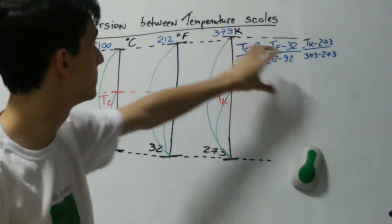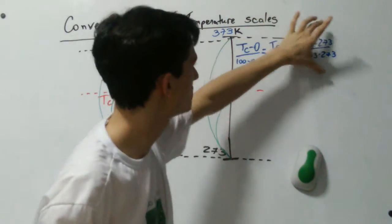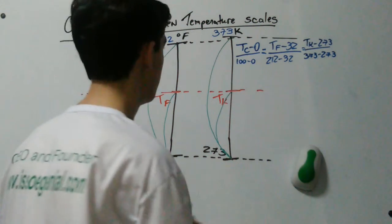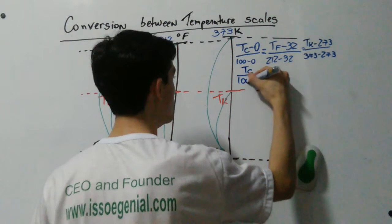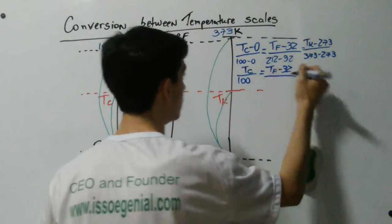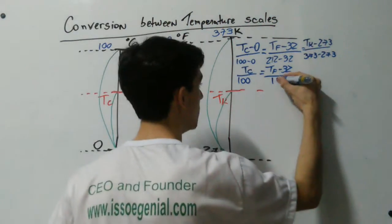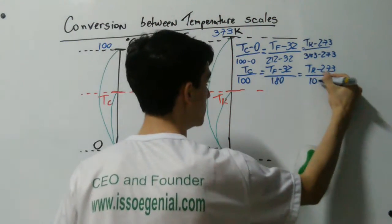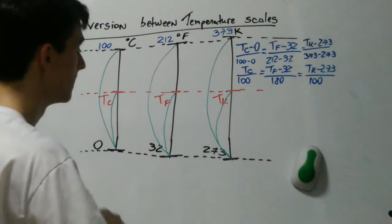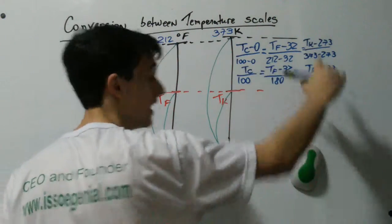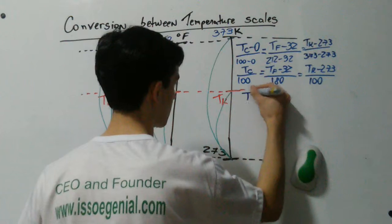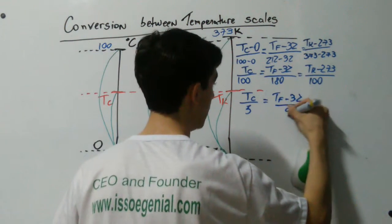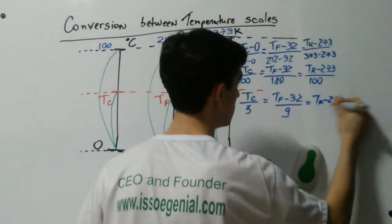This is a true statement because this proportion equals this proportion which equals this proportion — they are all the same proportion; what's changing is just the scale. Simplifying, we have Tc over 100 equals Tf minus 32 over 180 equals Tk minus 273 over 100. Multiplying all three fractions by 20 gives us Tc over 5 equals Tf minus 32 over 9 equals Tk minus 273 over 20.